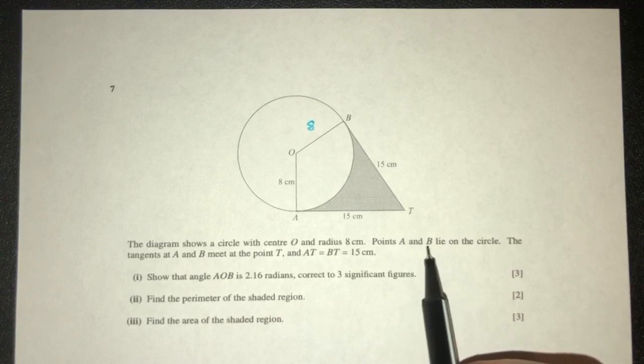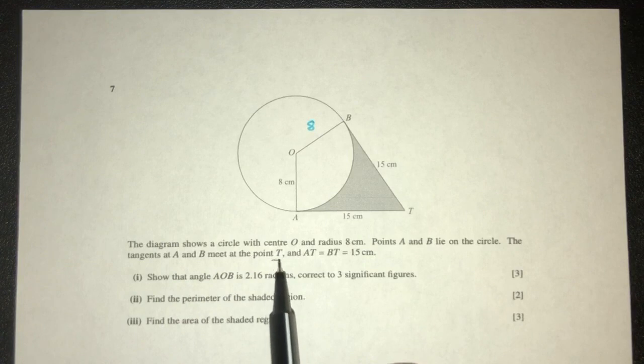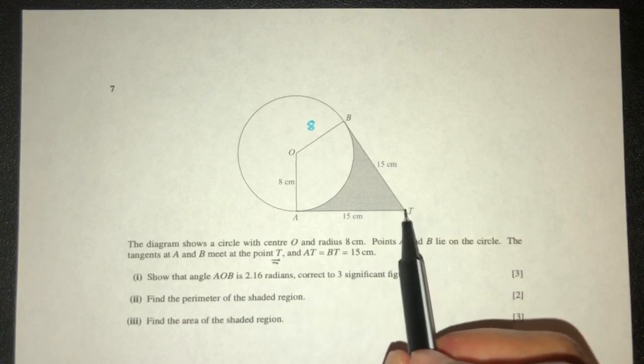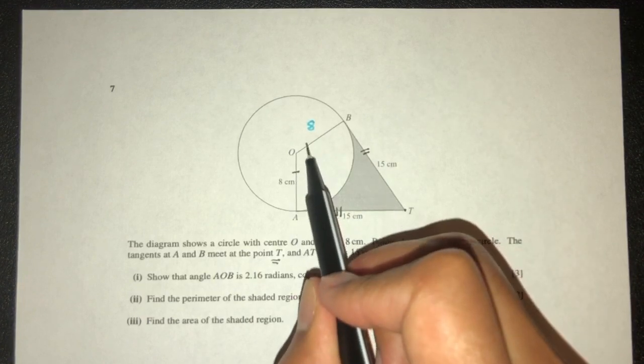Now the points A and B lie on the circle, and the tangents at A and B meet the point T. So they meet at the point T. Now I can see this is the same as this, same as this as well.